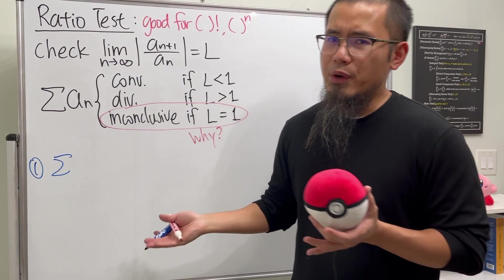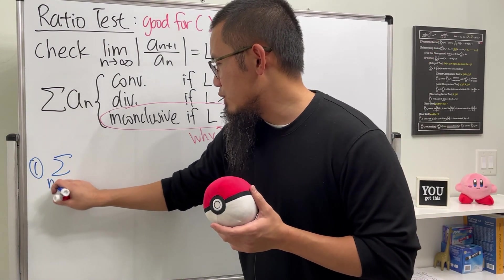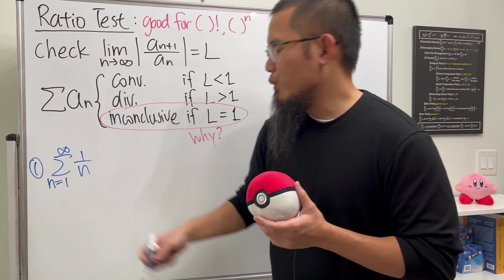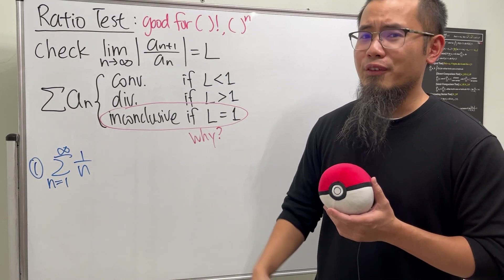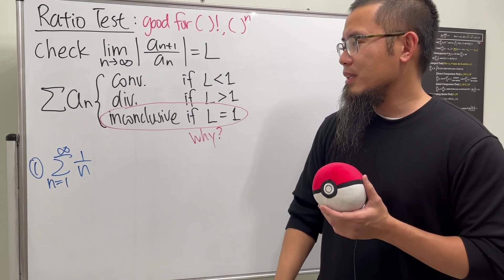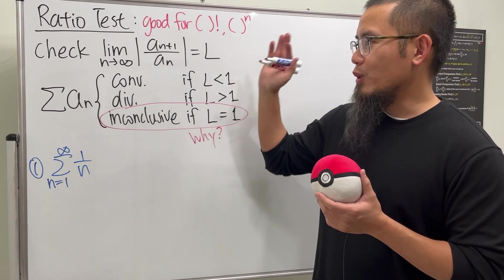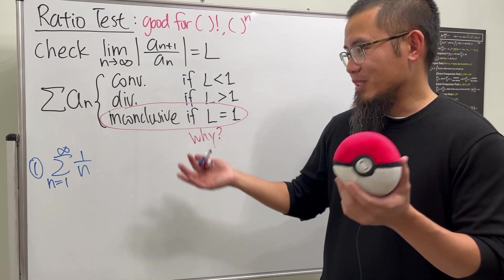I will give you this one right here, and this is going to be a very easy example. Let's say we have the series as n goes from 1 to infinity of 1 over n, which is just the harmonic series, and of course we know that diverges. But suppose we don't, and suppose that we are trying to use the ratio test for this and let's see what happens.